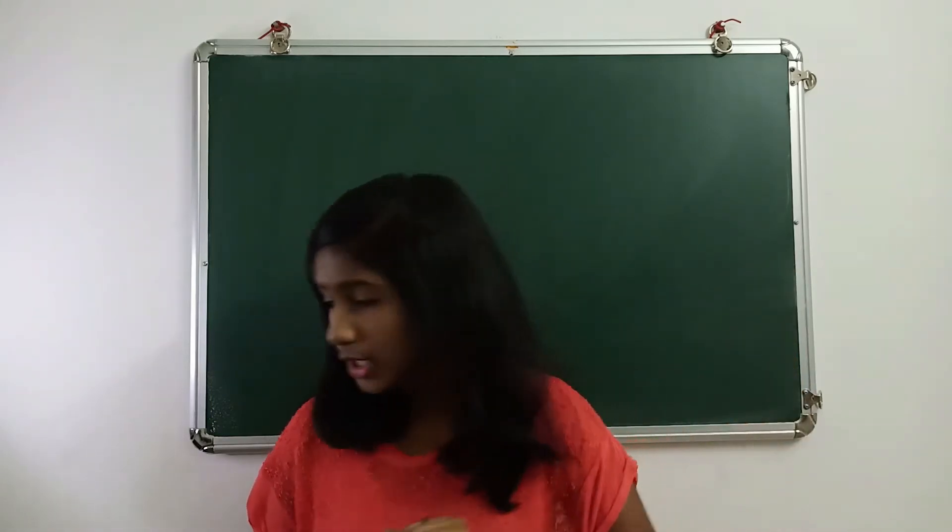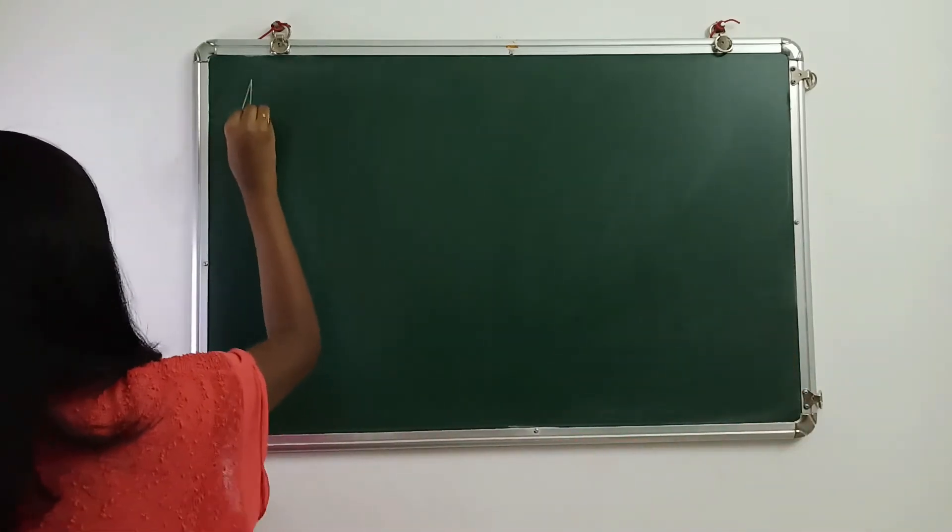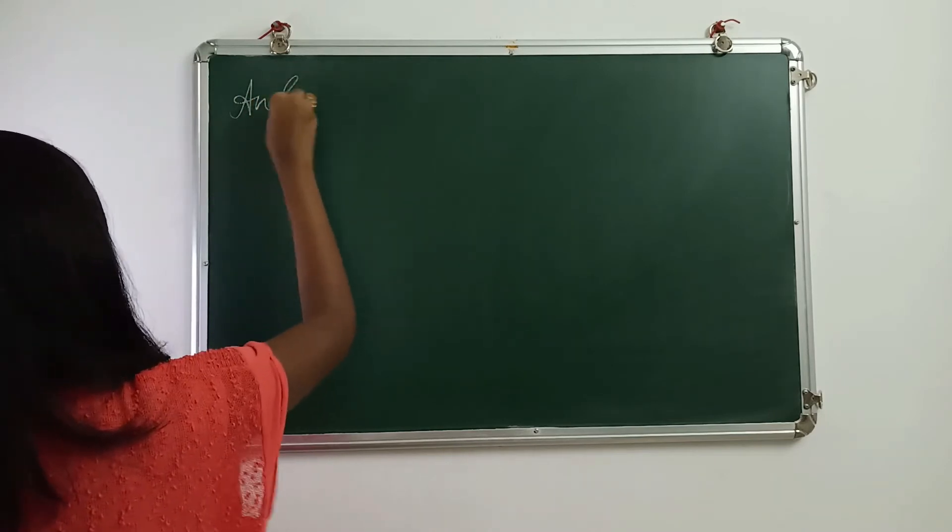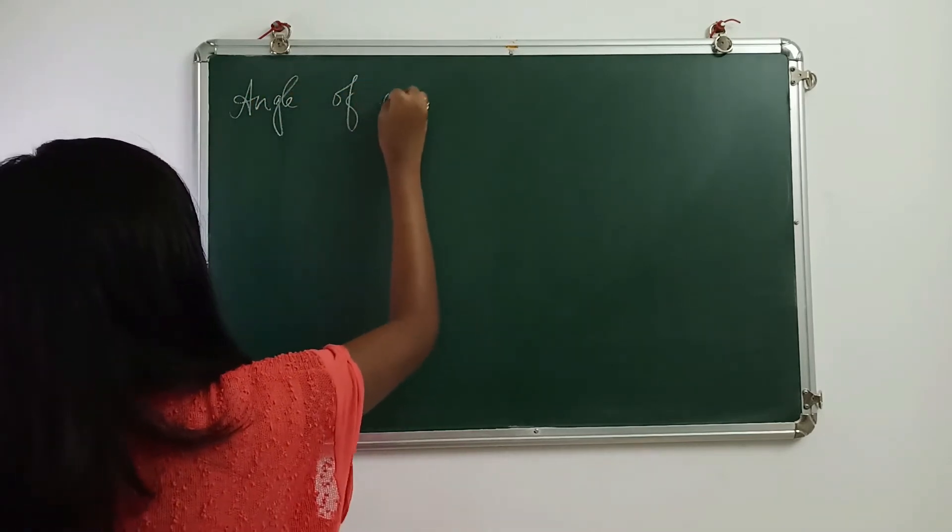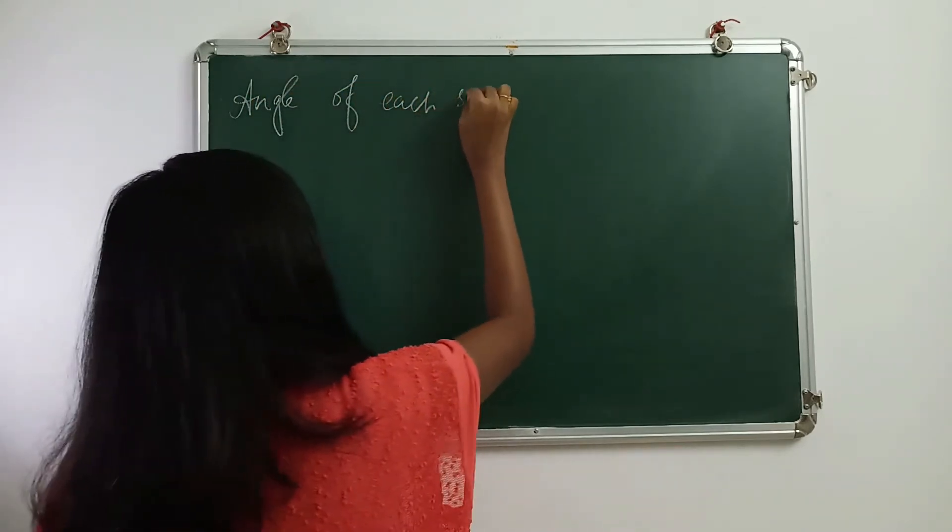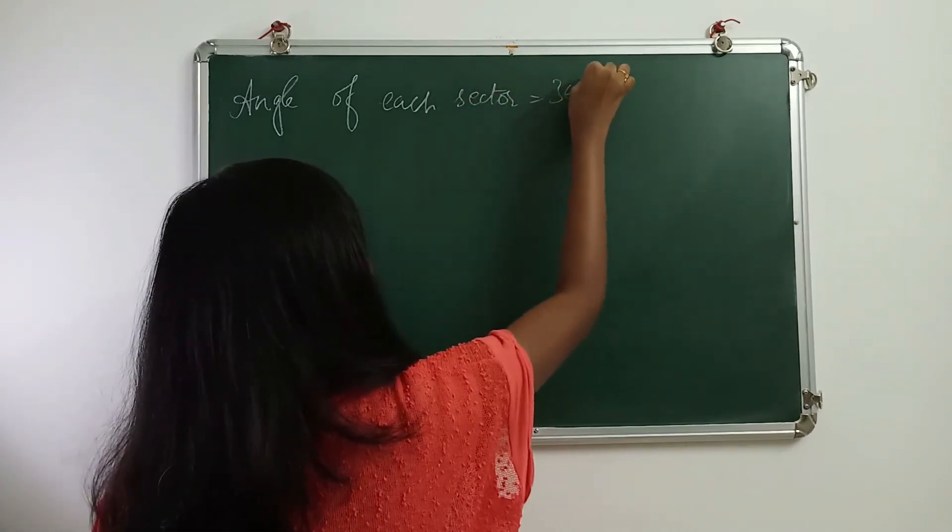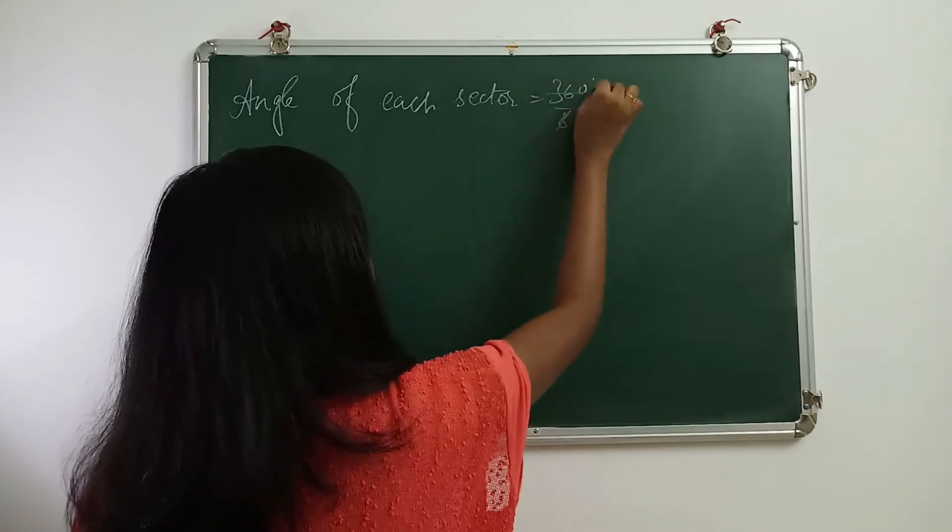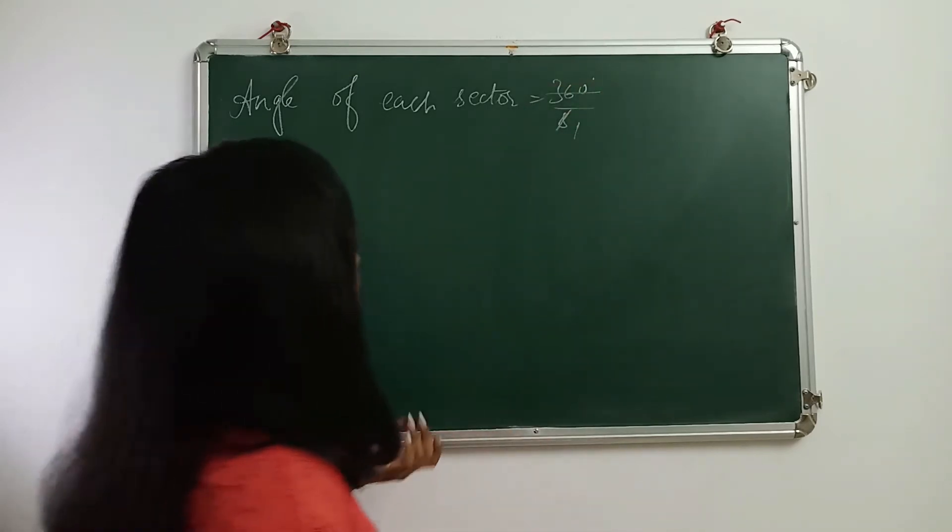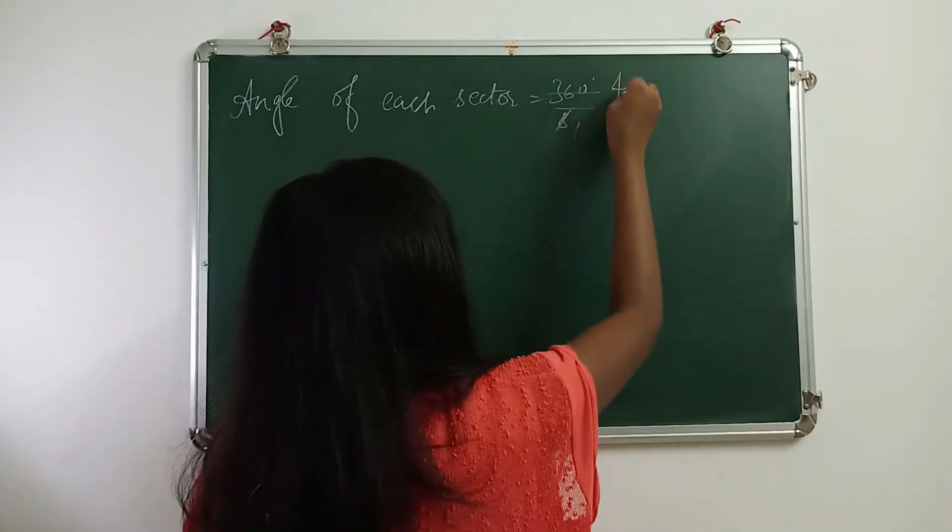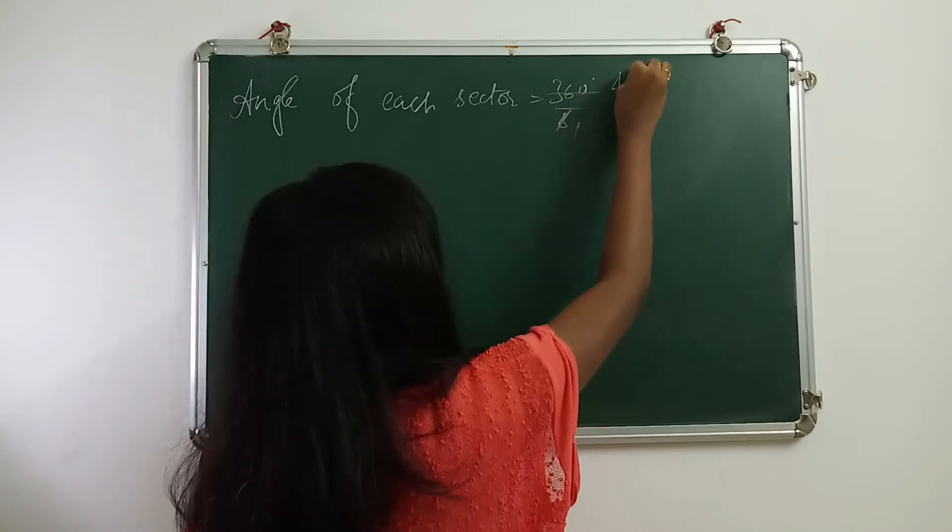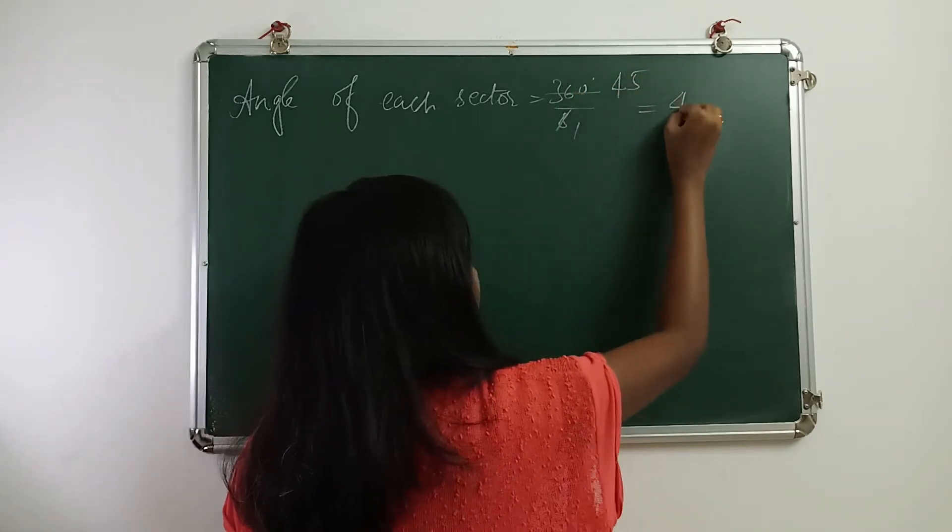To find angle of each sector, we have to divide 360 by 8. So, angle of each sector is equal to 360 by 8, which will be 45 degrees.